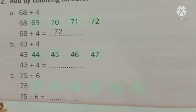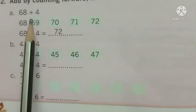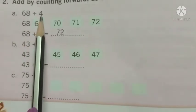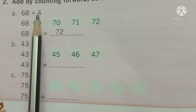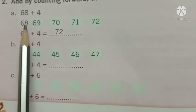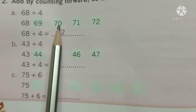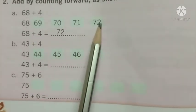Next one is 68 plus 4. That means we have to add 4 to 68. Write 4 more numbers after 68: 69, 70, 71, 72.